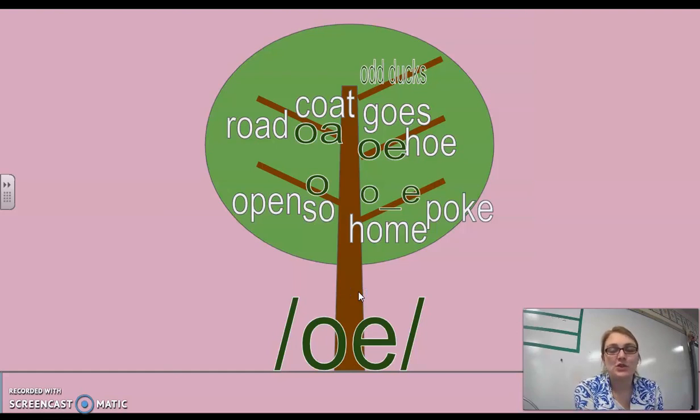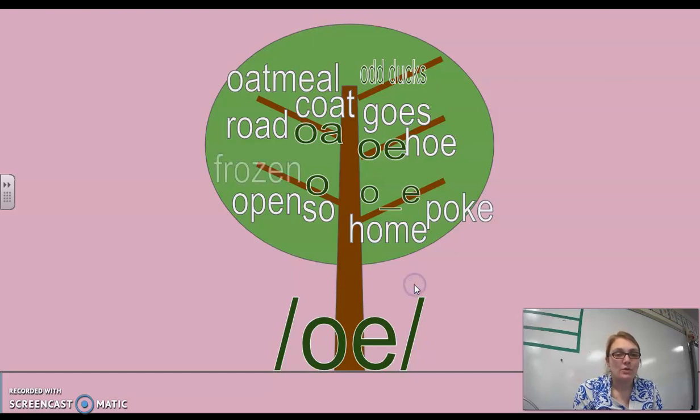On the screen, you see our tree for the O sound spellings. It's spelled O-A like in coat and road, O like in open and sew, O space E like in home and poke, and O-E like goes. We're going to add one more word to each branch. Oatmeal is on the O-A branch, frozen is on the O branch, toenail will go on the O-E, and tadpole on the O space E.